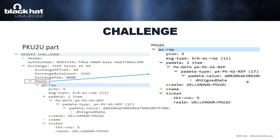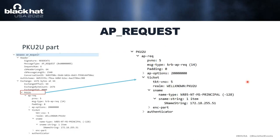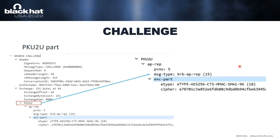Once the challenge is received, the client sends another AP Request — same name but different PKU2U content. This time it contains a normal Kerberos AP Request with the ticket received from the server, performing the actual authentication. The server then responds with another challenge containing a Kerberos AP Response. If everything works, the authentication in this part succeeds, but that doesn't mean the overall NegoX authentication is established yet — there is one more part.